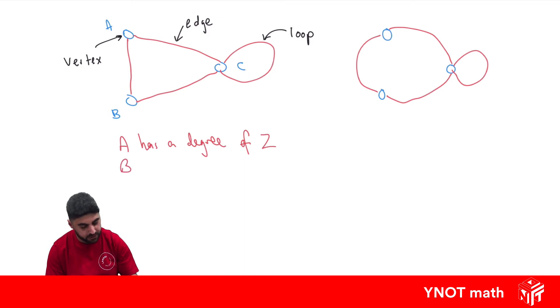B is going to have a degree of 2 as well because there are two edges connected to this vertex. And C is going to have a degree of 4 because we've got these two edges here and this loop, which provides two connections.